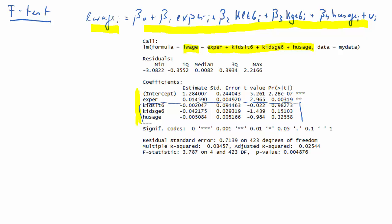If you look at these three variables, the two kids' variables and husband's age, they are variables that describe some of the family circumstances of the female employee. And individually, all these variables seem to be not statistically significant.